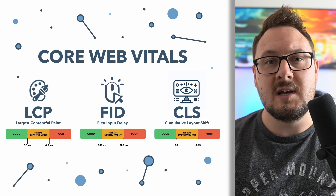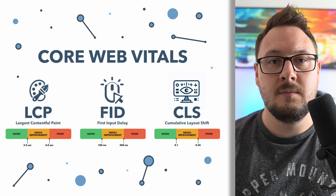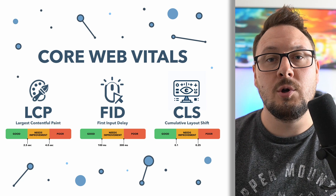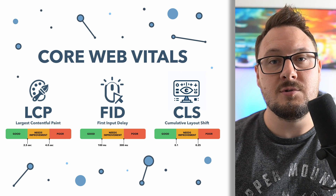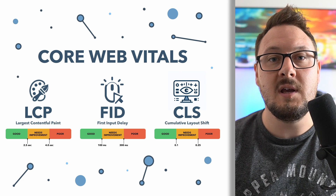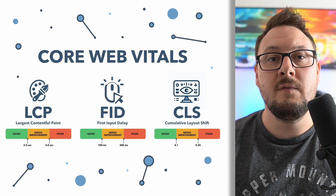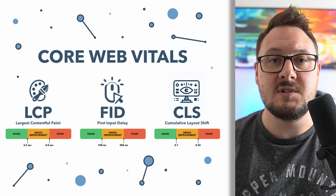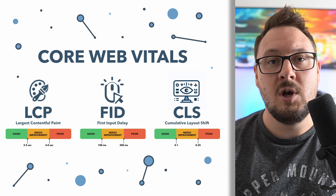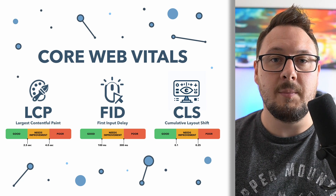Another critical aspect is understanding web vitals — metrics that Google considers important for a good user experience on the web. They include largest contentful paint, which measures loading performance; first input delay, which measures interactivity; and cumulative layout shift, which measures visual stability within your application. By monitoring these metrics, you can proactively spot issues that might not surface in a development environment but significantly impact user experience in production.